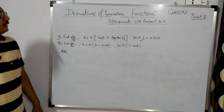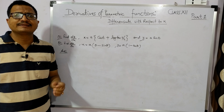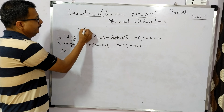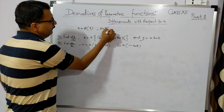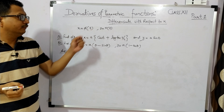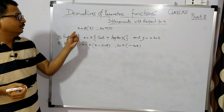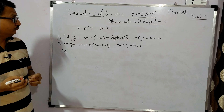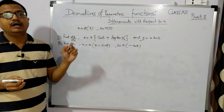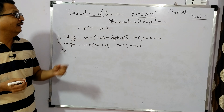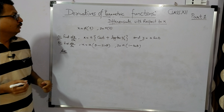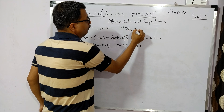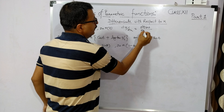Good morning to all of you. Today I am going to discuss parametric functions. Sometimes x and y are given as functions of a single variable, for example x = φ(t) and y = ψ(t) are two functions and t is a single variable. In such a case x and y are two parametric equations and t is called the parameter. To find the derivative of these equations: dy/dx = (dy/dt) / (dx/dt).